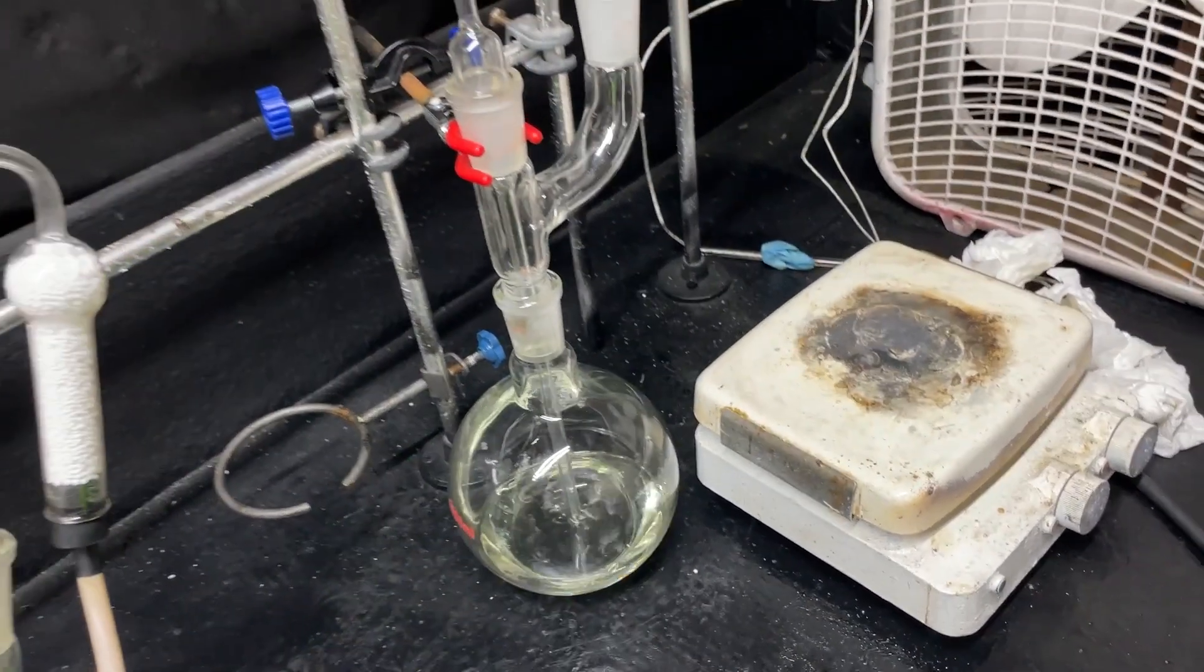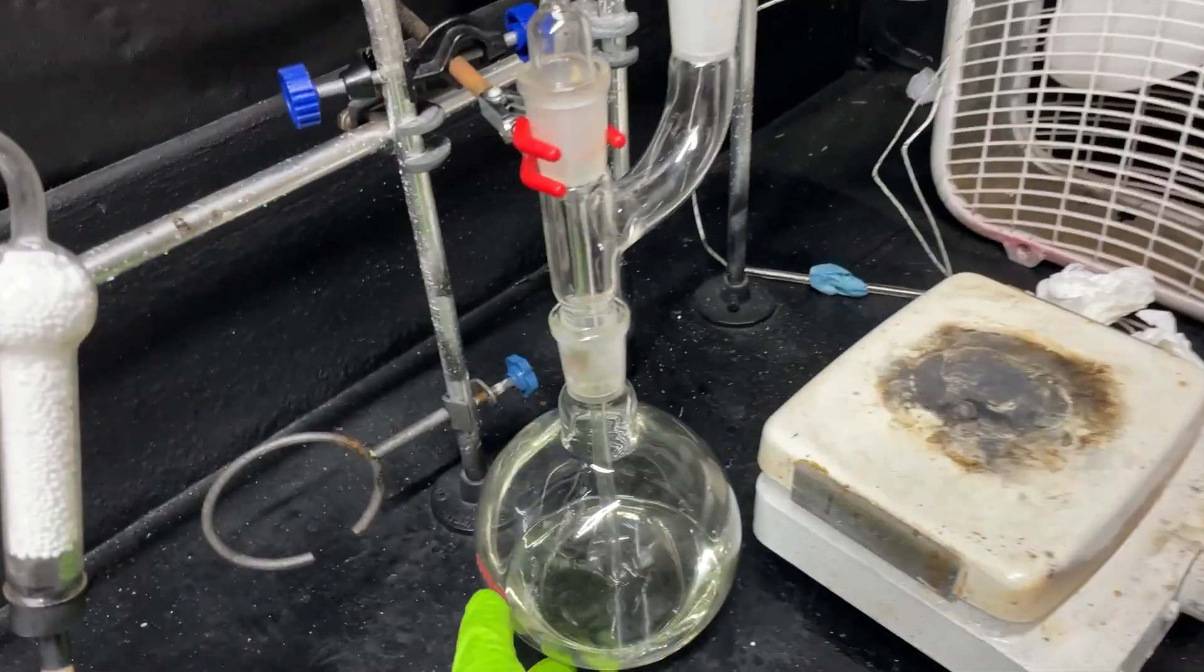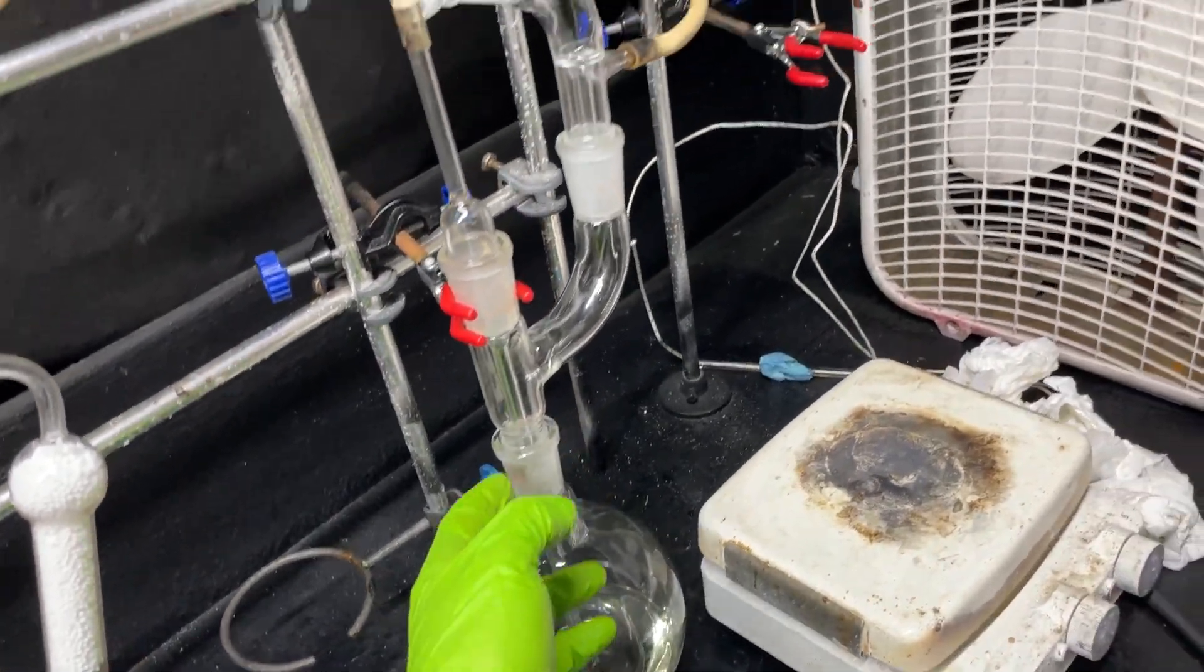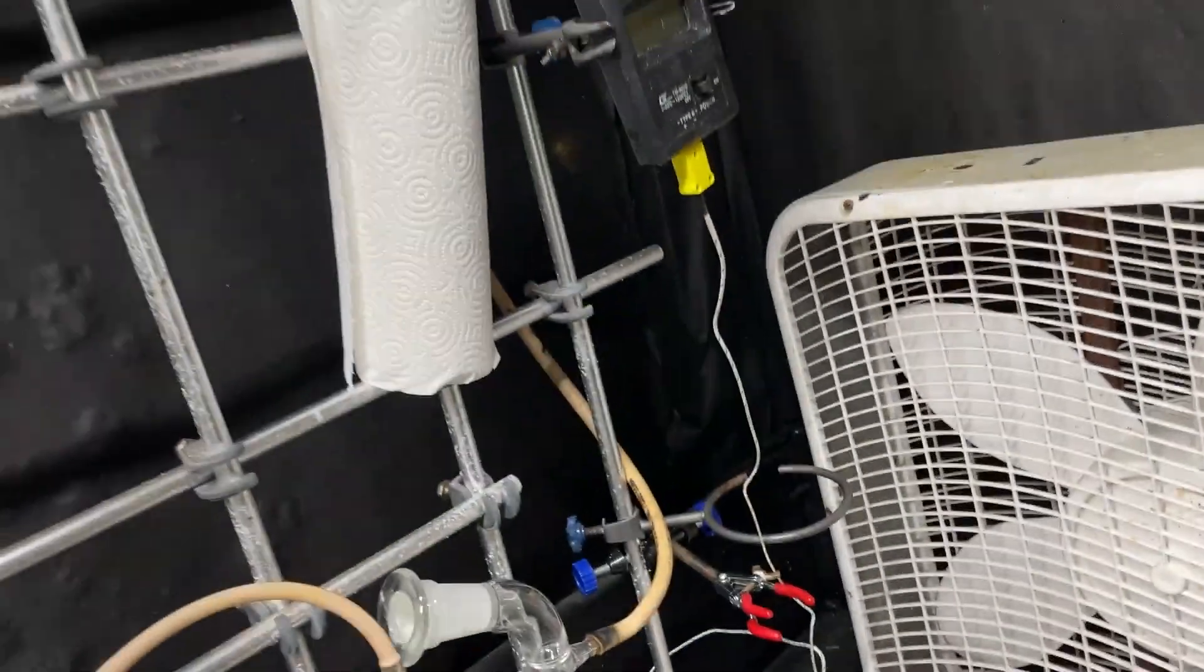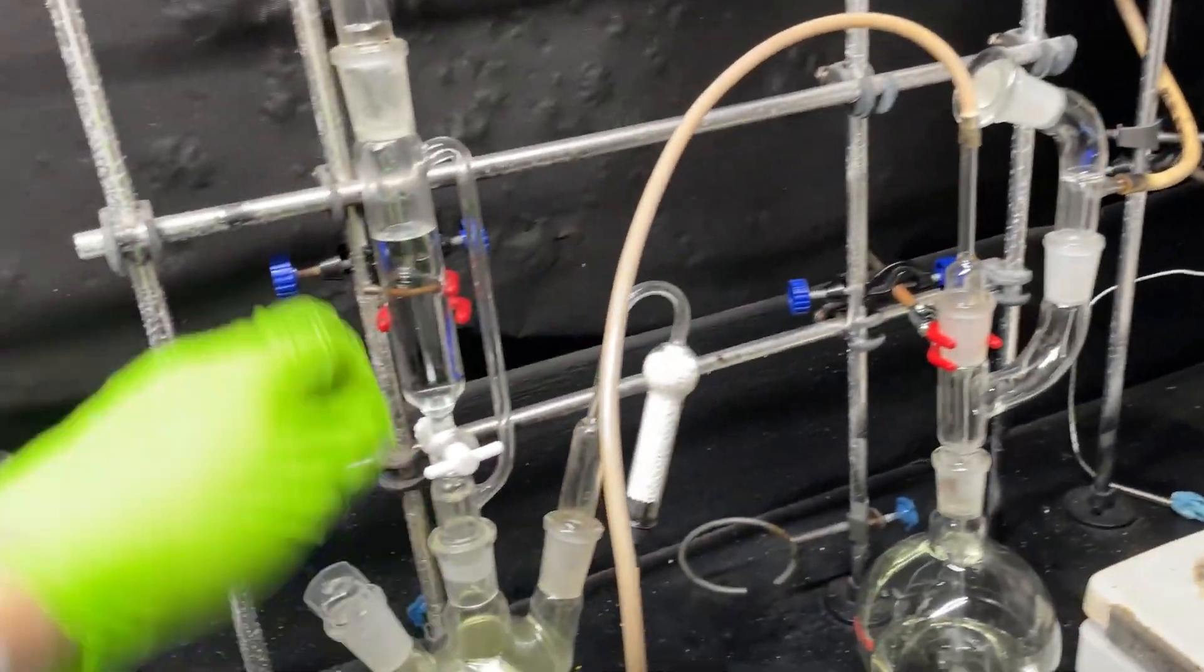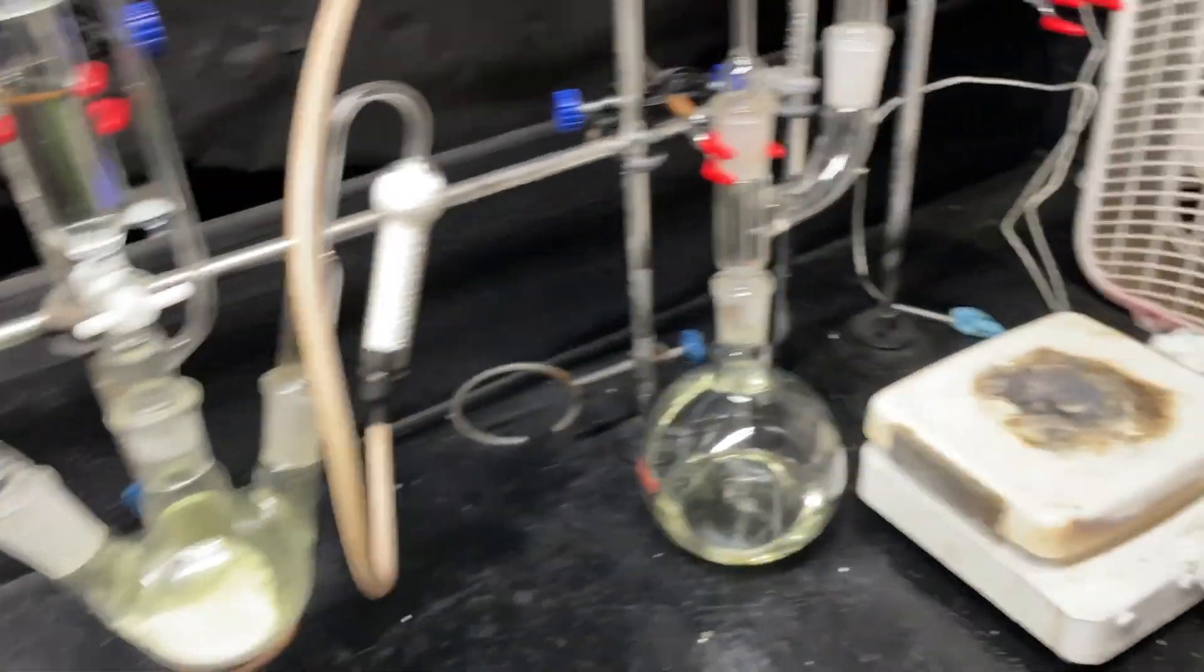And then this will also produce hydrochloric acid - well HCl not hydrochloric acid because technically it's not an aqueous solution. That will flow up and out this tube here and that will flow outside to get rid of the HCl. Let's go ahead and run it.